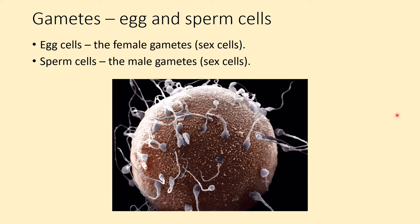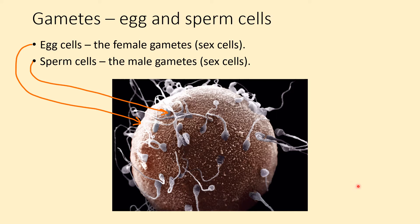The female sex cells are egg cells — they're the female gametes; that's the big one in the middle. And the male gametes are called sperm cells; they're the smaller ones around the outside. You can see from this photo, taken down a very high-powered microscope, how much bigger the egg cell is than the sperm.